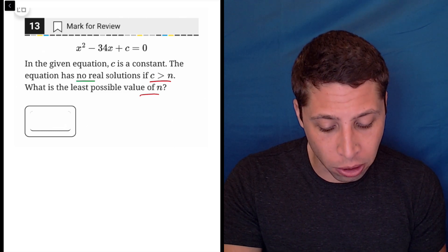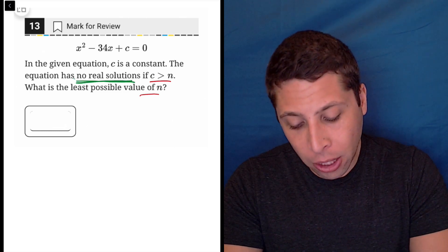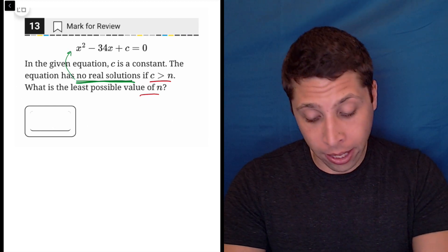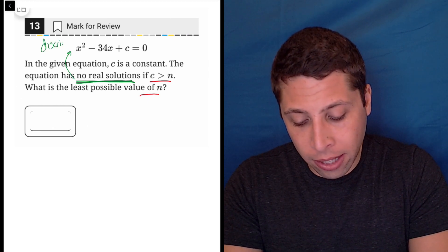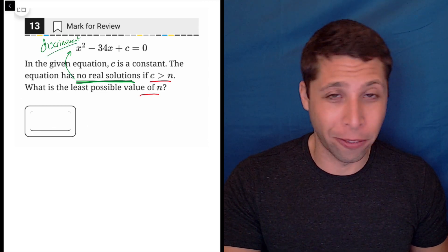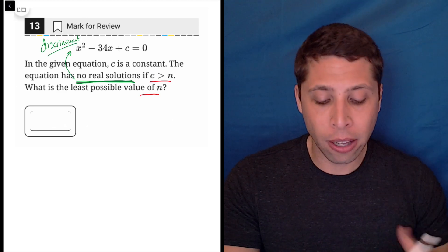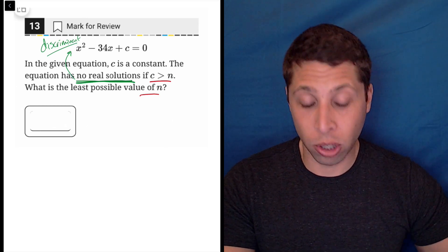So they're talking about the number of solutions, in this case they say no real solutions. And because this is a quadratic, we're going to have to use the idea of the discriminant. So this is a formula that you need to memorize for the advanced stuff on the SAT. Basically it is a part of the quadratic formula that tells us the number of solutions.